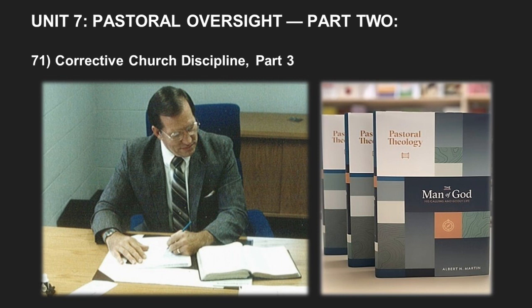'But as it is, I wrote unto you not to keep company, if a man that is named a brother be a fornicator, or covetous, or an idolater, or a reviler.' Notice — a reviler, one guilty of a pattern of abusive, evil speech, is put in the same list with idolaters, covetous, and fornicators. 'With such a one, no not to eat.'